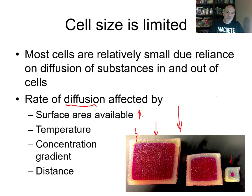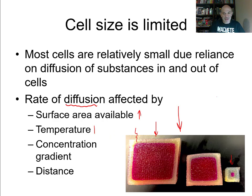Greater surface area means faster diffusion into and out of the cell. Temperature also matters: particles move around randomly, and as you increase temperature, the kinetic energy of those particles is much higher. So greater temperature means faster diffusion.